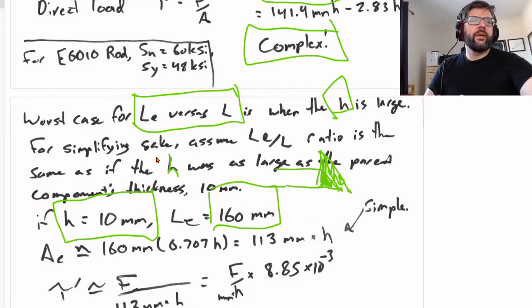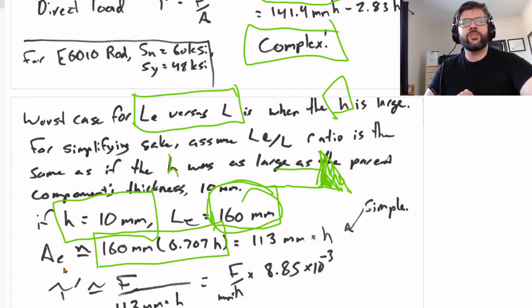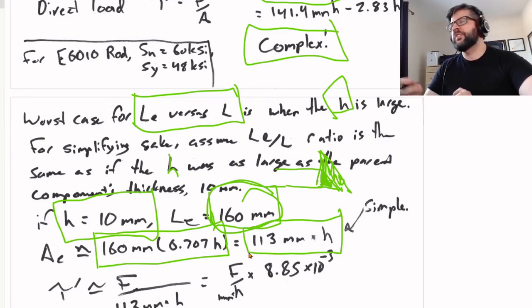So if we're assuming that the leg size of the welds H was as large as that component's thickness - basically the weld's taken up this entire size - it's basically as big as you can get a fillet weld. You can't build a fillet weld that goes larger than the component you're welding it to. So if you have an H of 10 millimeters, then the effective length is 200 minus 4 times 10, so 160 millimeters.